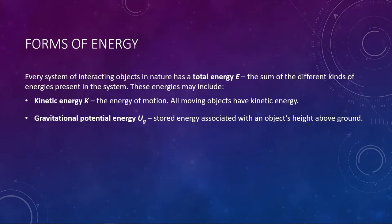Next up is gravitational potential energy. There are multiple kinds of potential energy, so we use subscripts. Capital letter U is the symbol for potential energy, and the subscript G denotes that it's gravitational. When we say potential energy, we mean energy that is stored and waiting to be used. Gravitational potential energy is the stored energy associated with an object's height above a surface. If your object is being lifted off the ground or moving up a hill, you will see a change in this type of energy.